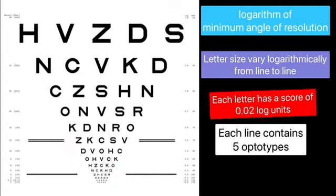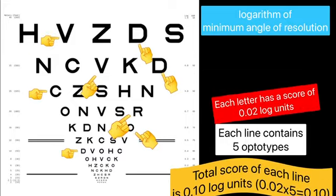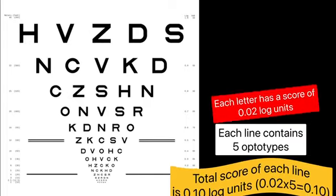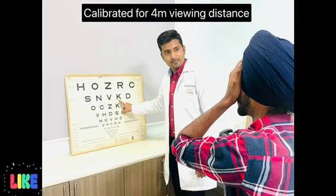Each letter on a LogMAR chart has a value of 0.02 log unit, and since each line contains five letters, therefore the total score of each line is 0.1 log units.